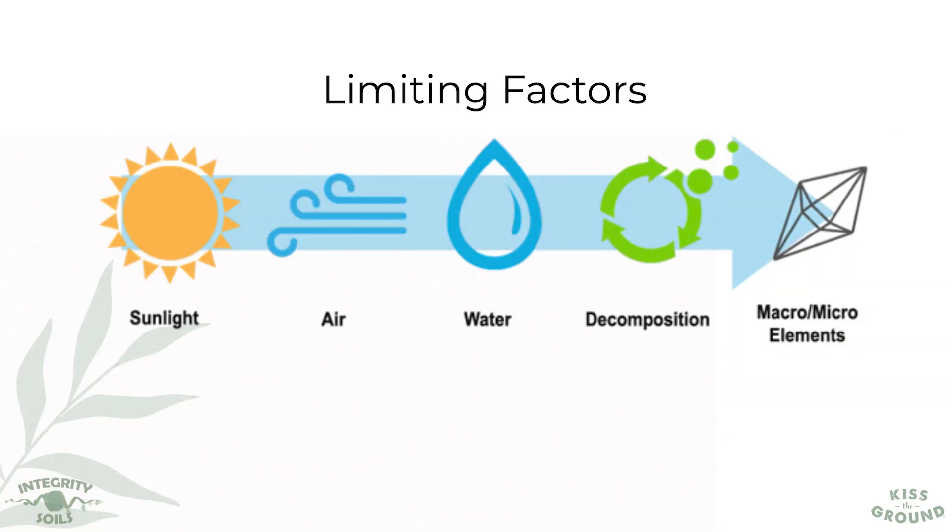The next factor is air. Plants cannot survive long without good air flows. So if we have compaction, that's one of the number one places we start to look at — what's causing that compaction and how do we address it? Because it's going to shut down your microbiology.